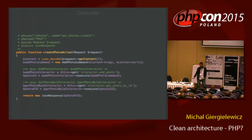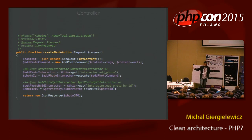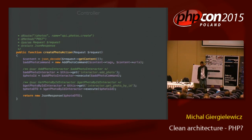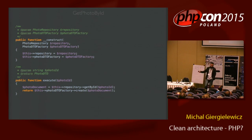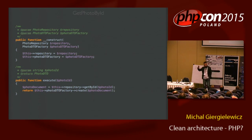Now we go back. We get from that execute method a photo ID — some identifier from the database. Now we need to ensure that we stored properly and we need to pass that response to the screen, to the user. And we use another interactor called GetPhotoByID. I get the interactor from the service, I call the execute method, I pass the ID as the parameter. And as you see, the constructor has a photo repository interface and a photo DTO factory to create the DTO from the response from the ORM.